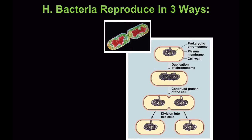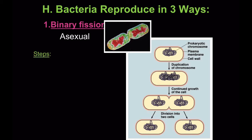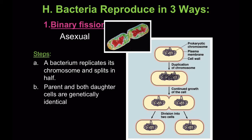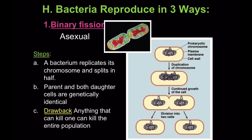Bacteria reproduce in three ways. Binary fission is asexual reproduction where a bacterium replicates its chromosome and splits in half. The parent and both daughter cells are genetically identical. One drawback is that anything that can kill one can kill the entire population because they're all clones.